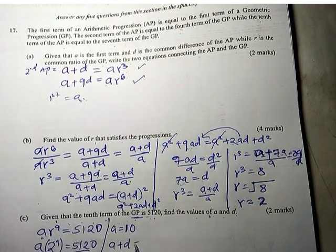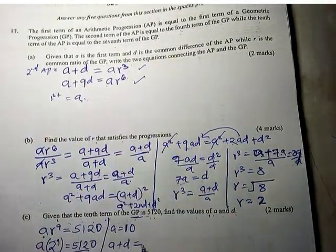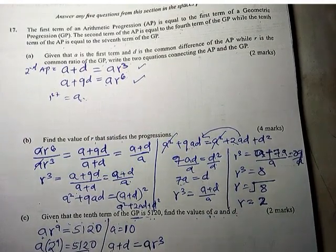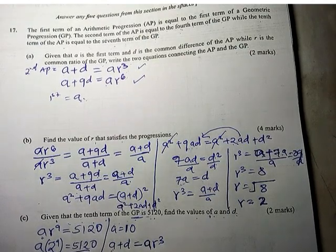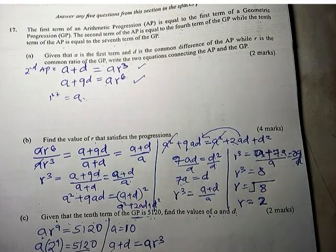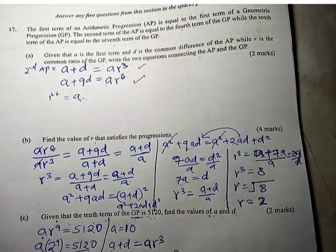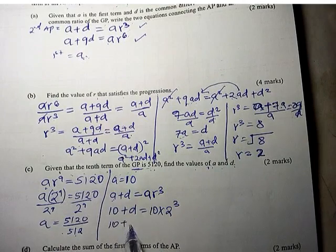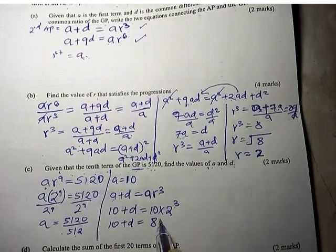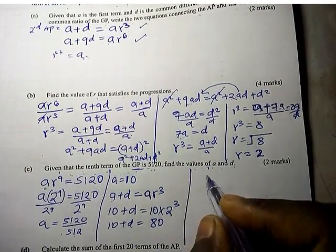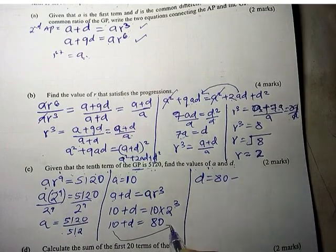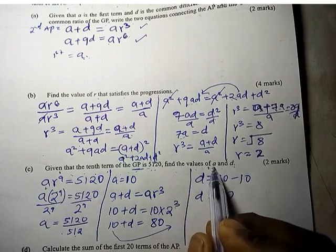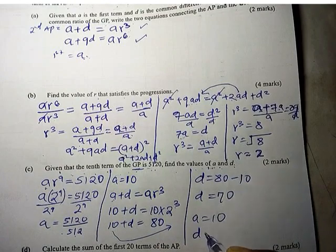Using the equation A + D = AR³: 10 + D = 10 × 2³ = 10 × 8 = 80. Therefore D = 80 − 10 = 70. So A equals 10 and D equals 70.